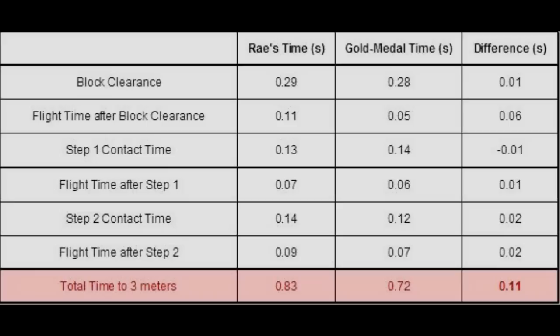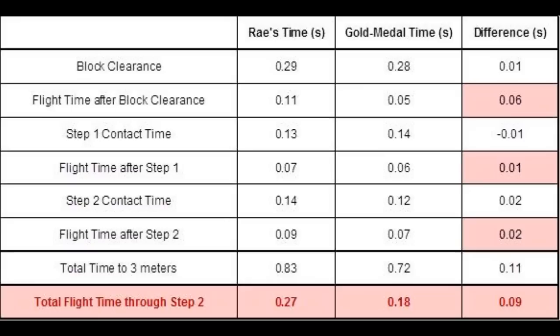Ray's an elite sprinter, and if he can reduce his time in the first three meters of the race, he will be on a gold medal pace. Since Ray's ground contact times are very good, the most effective way for him to improve his start time is to lower his aerial time and to increase his stride frequency during the first two steps. He can do this by directing his forces more horizontally and having lower recovery during these first few steps.